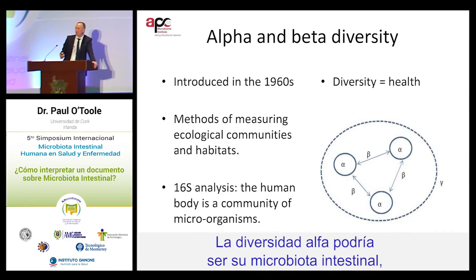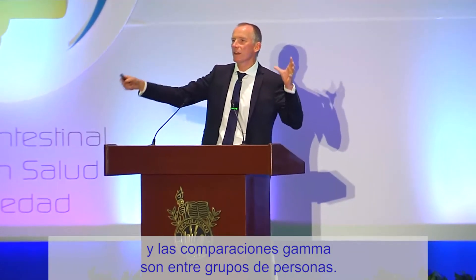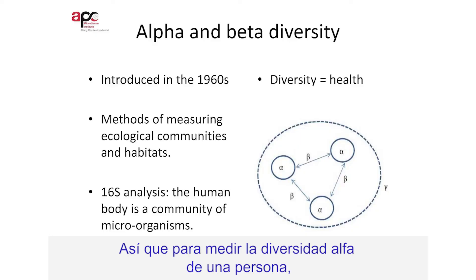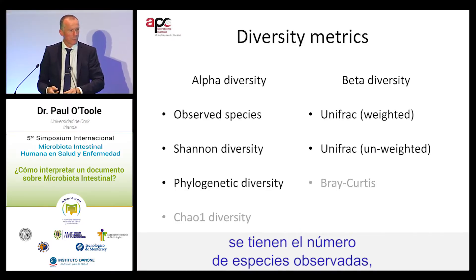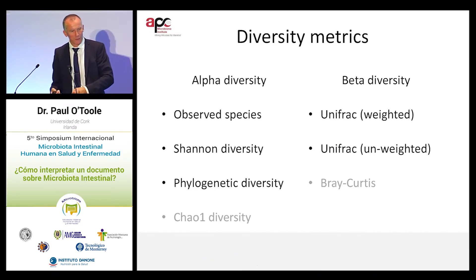Alpha diversity could be your gut microbiota, while gamma comparisons are between groups of individuals. For alpha diversity, to measure the microbiota in one person, we have the number of observed species, Shannon diversity, and phylogenetic diversity.